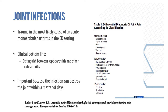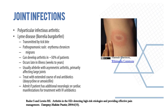The differential diagnosis of joint pain is broad — monoarticular or periarticular — and includes osteoarthritis, gout, rheumatoid arthritis, and many others with similar features. Polyarticular infectious arthritis is not uncommon in some developed countries; for example, Lyme disease, transmitted by tick bite, with the pathognomonic rash erythema migrans occurring in about 30–50% of patients. Lyme typically presents with fever and asymmetric arthritis and is treated with an extended course of oral antibiotics, with hospital admission for neurologic or cardiac manifestations.